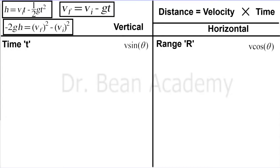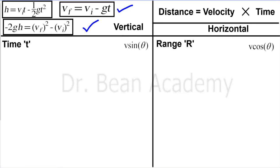Let's derive some important equations related to projectile motion. A projectile motion can be decomposed into two sections. I have divided this screen into two sections: vertical and horizontal, and I will do relevant calculations in these sections. In the left section for vertical motion, I have written three equations of motion for bodies moving under the effect of gravity. I hope you are familiar with them because we will use them to calculate some important quantities.